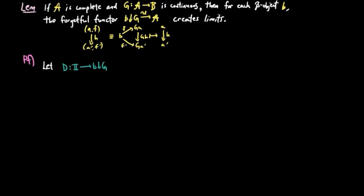To prove this, let D be a diagram with DI equal to the B over G object AIFI for each I, and let the cone PI from L to AI be the limit of UD. Note that AI equals UDI.